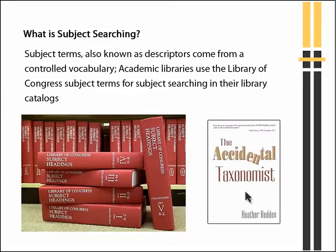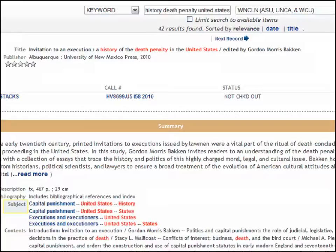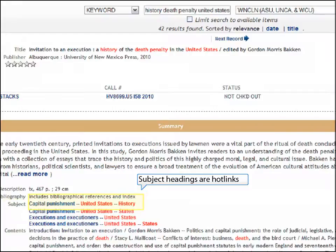Subject terms, also known as descriptors, come from a predetermined vocabulary. An example would be the Library of Congress subject terms that academic libraries use for subject searching in their library catalogs. A subject search searches only the subject or descriptor field in a library catalog or library database record. The subject terms tell you what the book is about, so click on the subject to find additional material on this topic.